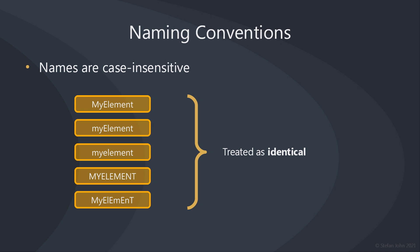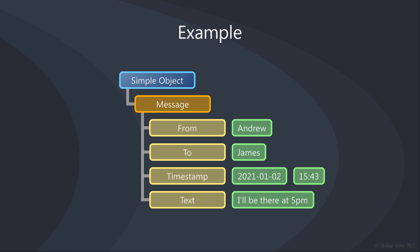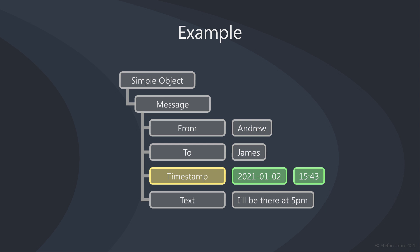Now let's have a look at a simple example. Here is a simple object of a message. You can see the root element in orange. It is called message and has four child attributes, which are colored in yellow. The first two attributes identify the sender and receiver of the message, both with a single value. The third attribute is the timestamp when the message was sent, with two values — date and time separated. The fourth attribute contains the message's text. There are no further child elements, so this is a quite simple example.